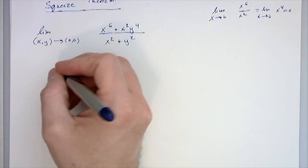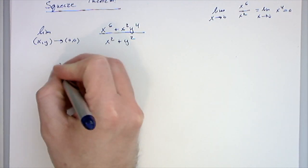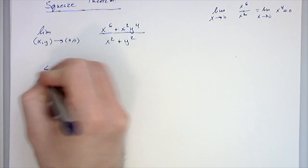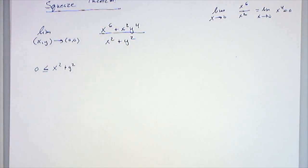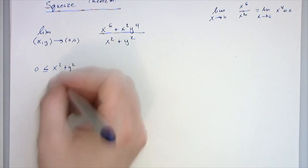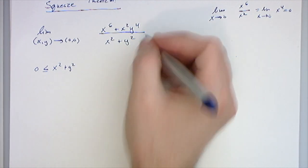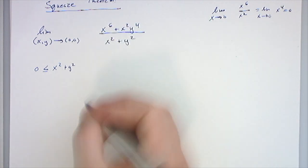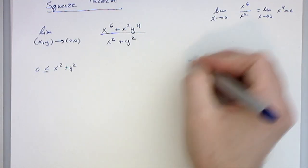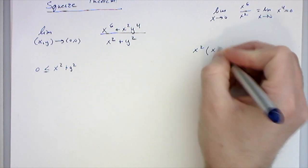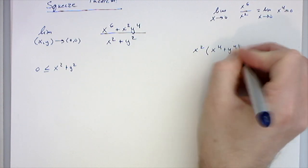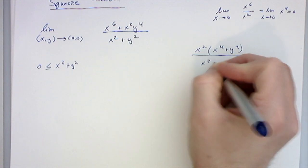So I know that x squared plus y squared is always greater than or equal to 0. So what I'm trying to do is get something on top that's less than that. I can factor out on top an x squared. So I can actually write the top as x squared times x to the 4th plus y to the 4th over x squared plus y squared.